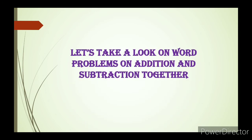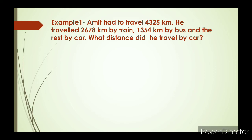Now let's take a look at word problems on addition and subtraction together. Example 1: Amit had to travel 4325 km. He travelled 2678 km by train, 1354 km by bus, and the rest by car. What distance did he travel by car?